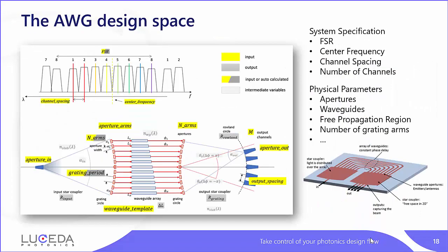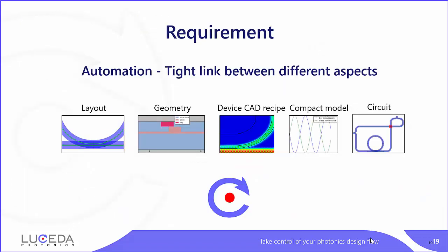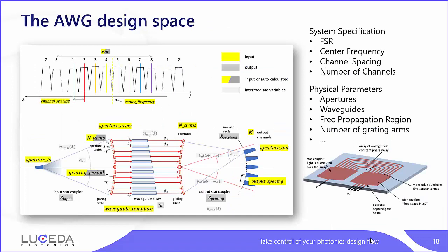AWG is a complex component with many design parameters that impact optical performance in different ways, making bottom-up construction almost impossible. With the filter toolbox, users can directly provide high-level parameters including FSR, center frequency, channel spacing, and number of channels, and it will calculate a DRC-clean layout and AWG behavioral model. I won't dive into more details as this is already a well-known product, but if you are interested, I will share contact information at the end of this presentation.